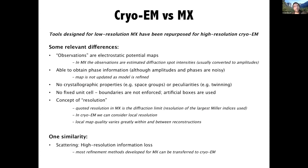Most of these tools were originally designed for macromolecular crystallography, but fortunately some of the tools for low resolution MX have been able to be repurposed for high resolution cryo-EM. Before we do that, we have to think about some of the relevant differences between cryo-EM and MX. The observations in cryo-EM are actually the electrostatic potential maps, whereas in MX the observations are the estimated diffraction spot intensities, usually converted to amplitudes before refinement. In cryo-EM we're able to obtain phase information, and as a consequence the map is not updated as the model is refined, at least not at the minute.